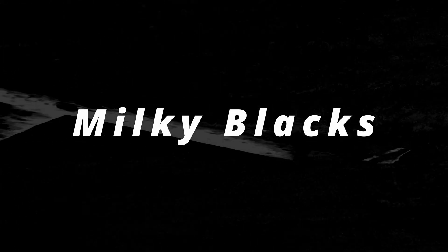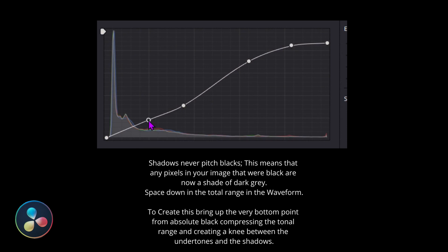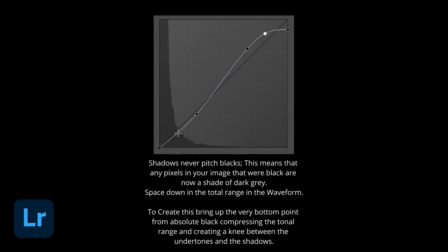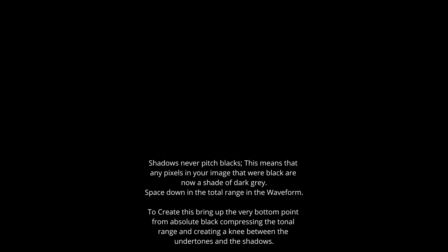Milky blacks: shadows never pitch blacks. This means that any pixels in your image that were black are now a shade of dark grey, spread down in the tonal range in the waveform. To create this, bring up the very bottom point from absolute blacks, compressing the tonal range and creating a nice blend between the undertones and the shadows.